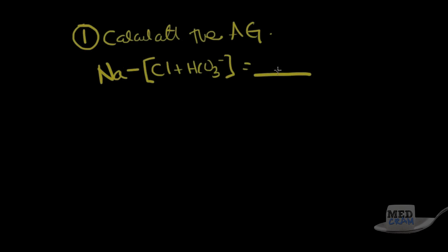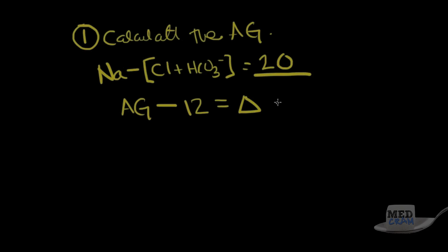Assuming albumin is 4, if the anion gap is greater than 12, you calculate what we call the delta gap. For example, if the anion gap is 20, then the delta gap equals 20 minus 12, which equals 8.